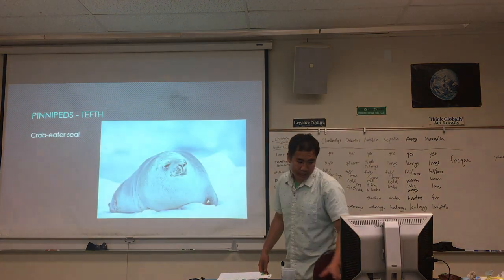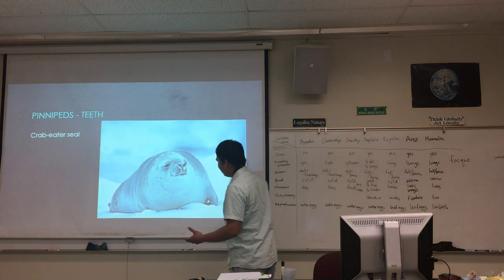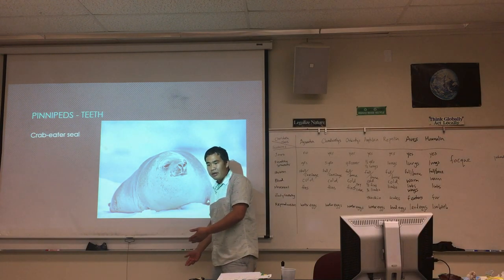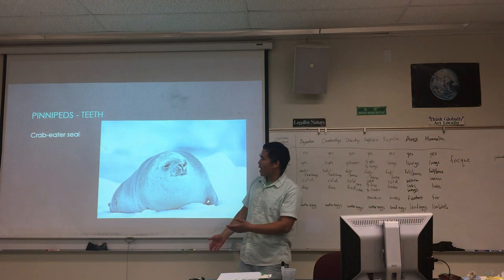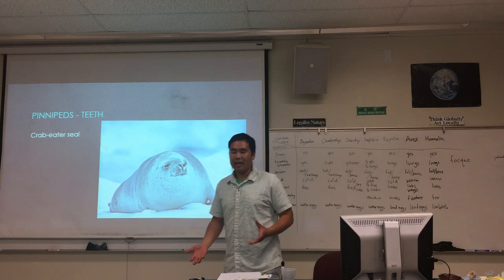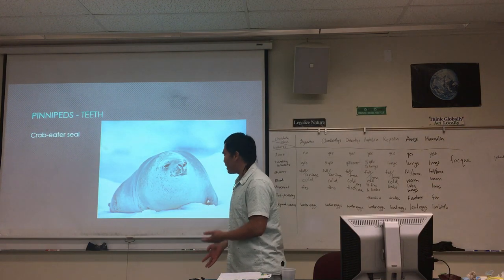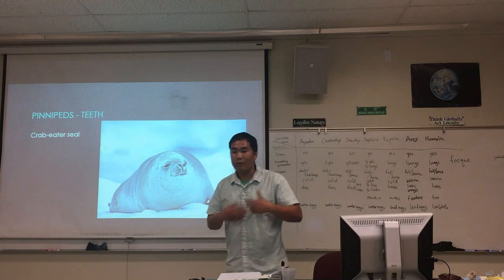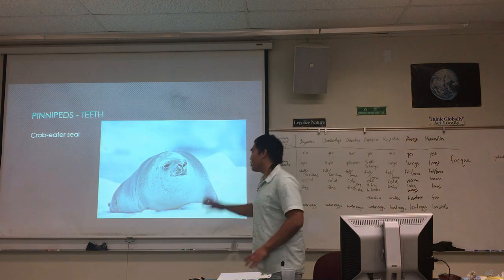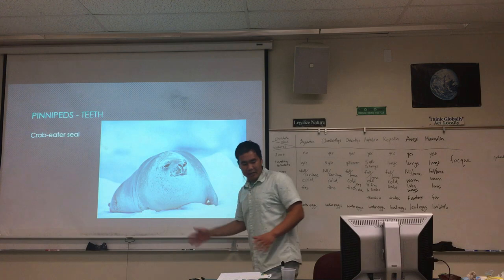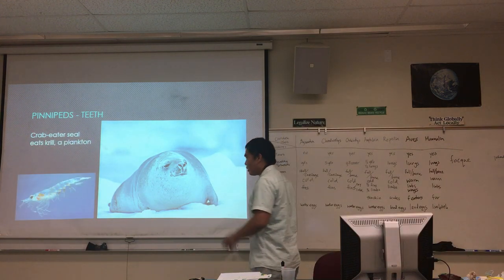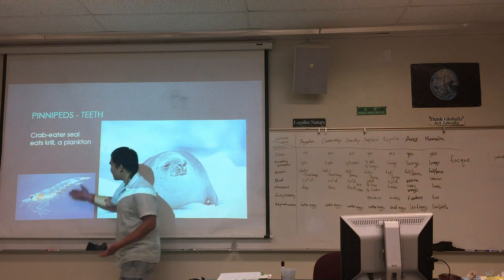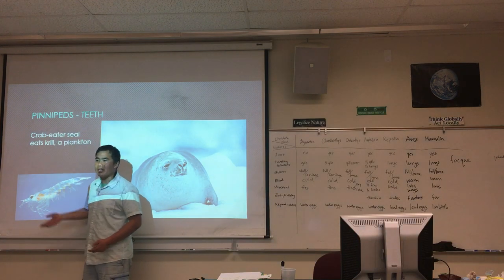So the crab-eater seal is filter feeding with its teeth — kind of like using a net. That's pretty much it for pinnipeds. Now let's get into the other very popular group of marine mammals: cetaceans. Cetaceans is another infra-order and refers to whales — including dolphins and porpoises.